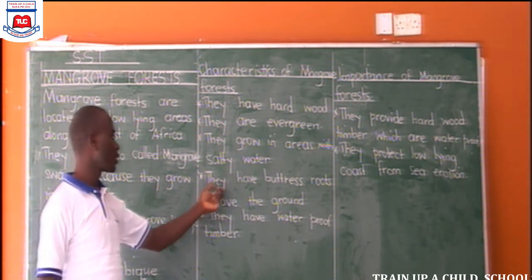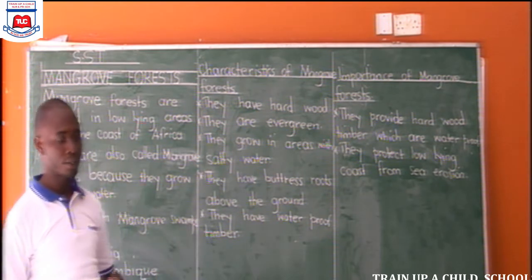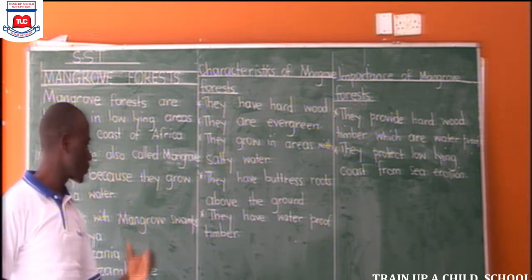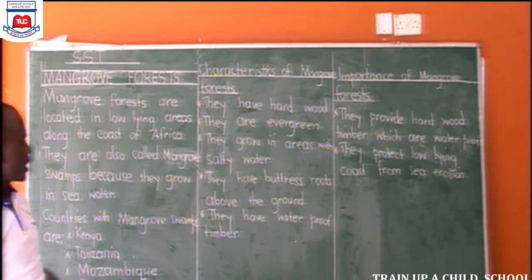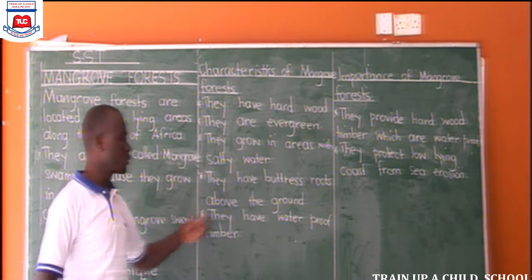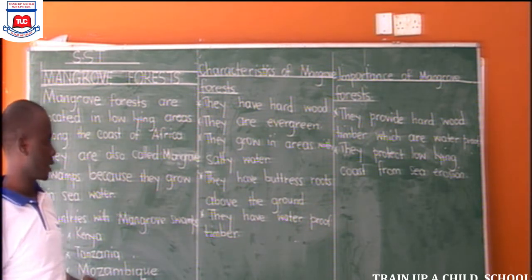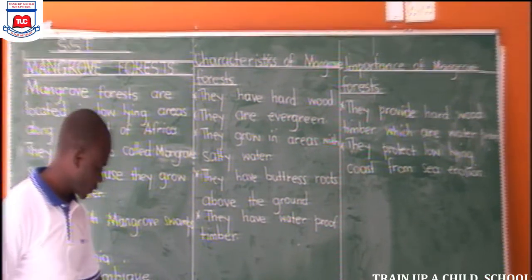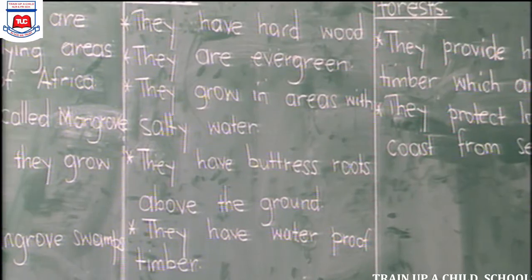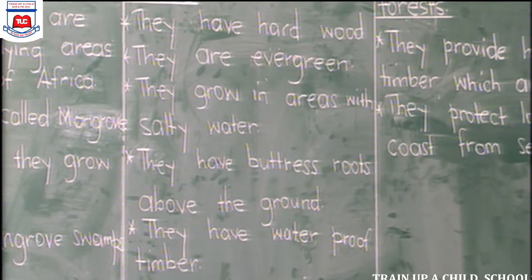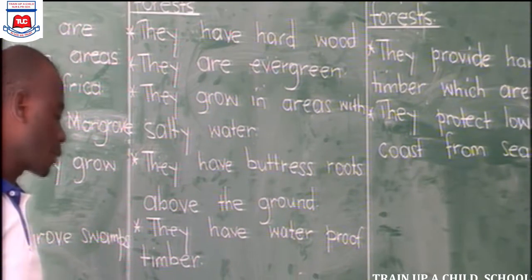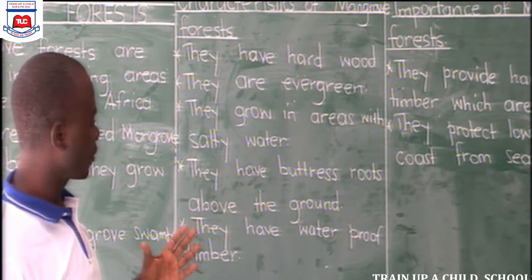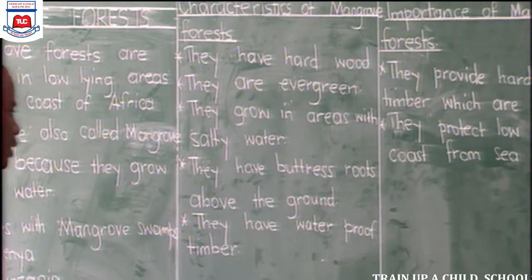Mangrove forests have buttress roots. They have buttress roots to give them support in such areas which are salty, around the coast of West Africa and East Africa. Buttress roots help trees to stand firm in salty water.